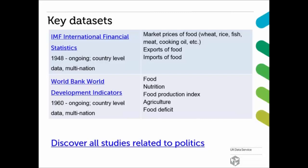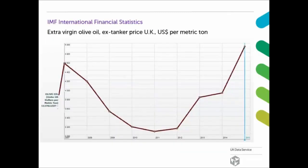The World Bank World Development Indicators also have data about food, covering food nutrition, food production index, agriculture, and food deficit. These are only a couple of the datasets that have information about food and food security. There's also a graph here about extra virgin olive oil ex-tanker price in the UK in US dollars per metric ton, which comes from the IMF International Financial Statistics — another type of data you can get from the UK Data Service.